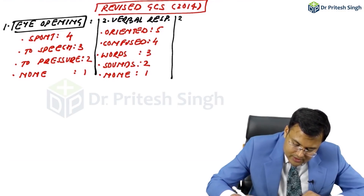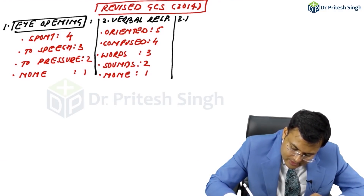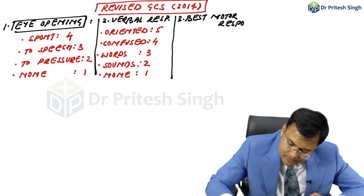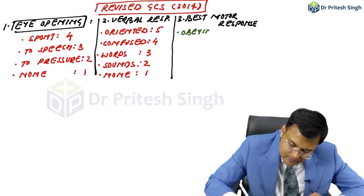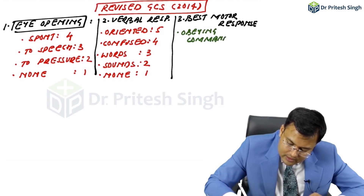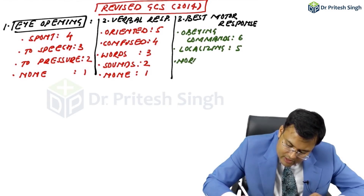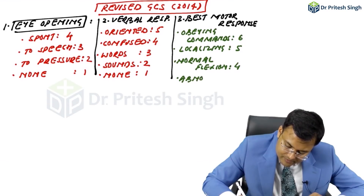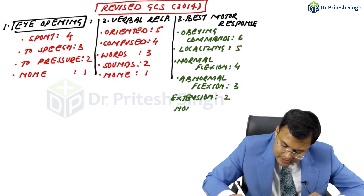The third component is Best Motor Response. Be careful — it is the best parameter to predict survival, so it is the Best Predictor of Outcome. Obeying Commands scores 6. Localizing Pain is 5. Normal Flexion or Withdrawal of Pain is 4. Abnormal Flexion is 3. Extension is 2. And No Response is 1.